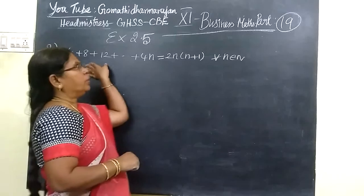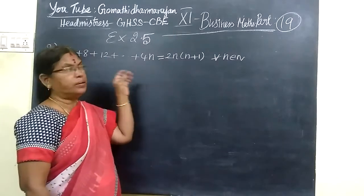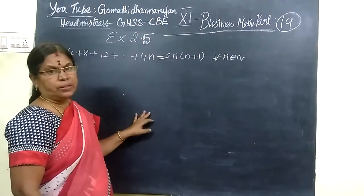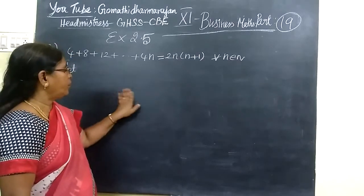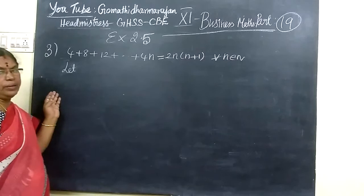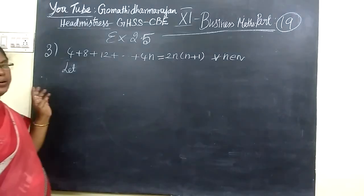Now we are seeing POP 19 business math and this is for learning standard S&P 2.5, question number 3. In the last class we are seeing 1 and 2, now 3.